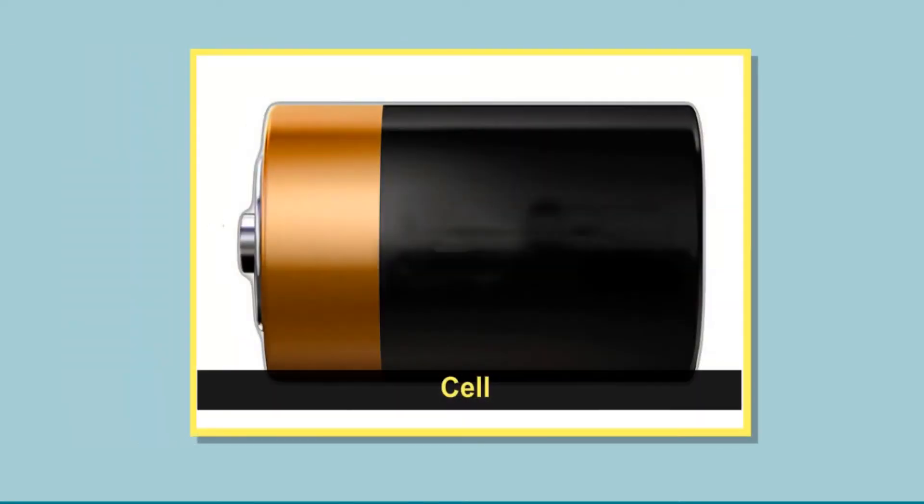You must have used small electric cells many times to play with your toys or to use a camera. Very small electric cells are also used in calculators, watches and other devices. All these cells have a similar basic structure. All electric cells have a positive and a negative terminal.